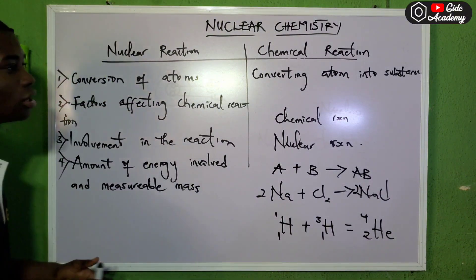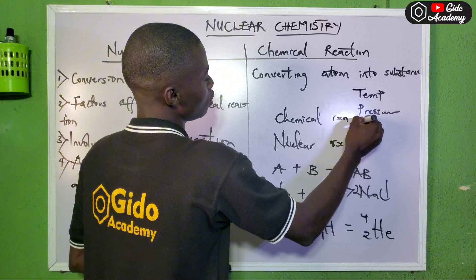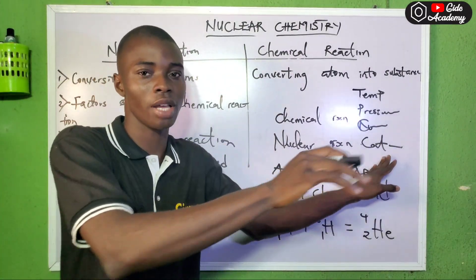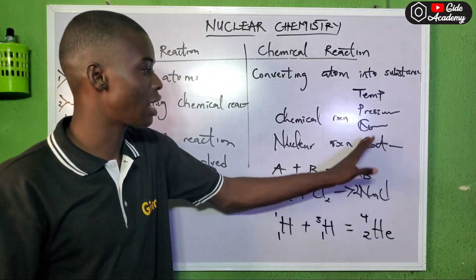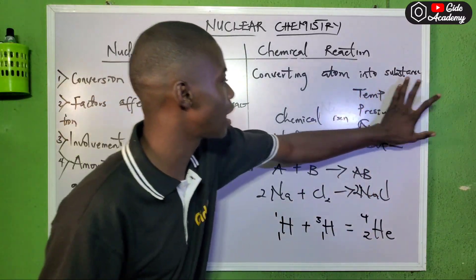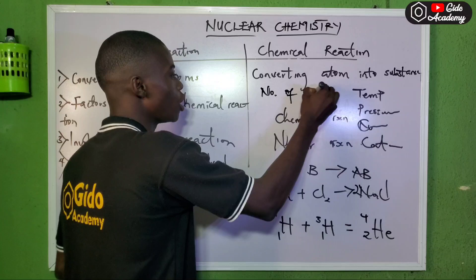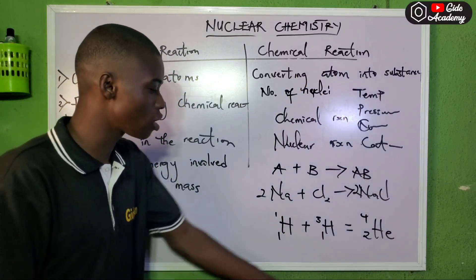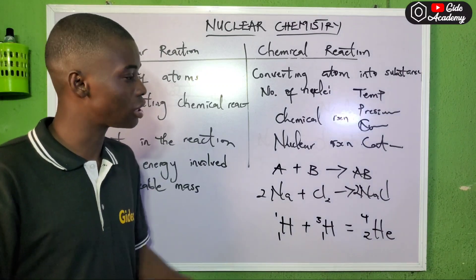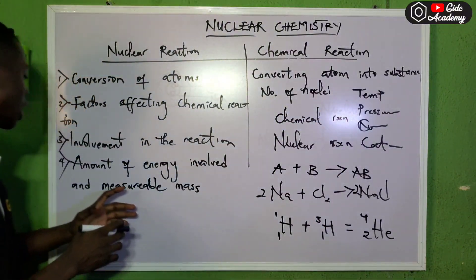What are the factors affecting chemical reaction? We know that temperature, pressure, concentration, and catalyst affect chemical reaction — though catalyst affects the rate of the reaction rather than the reaction itself. But these factors do not affect nuclear reaction. What affects a nuclear reaction is the number of nuclei. Temperature, pressure, number of moles, and concentration have nothing to do with a nuclear reaction. The only thing that can affect a nuclear reaction is the number of nuclei.